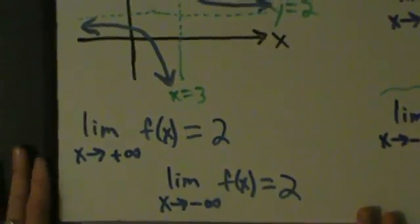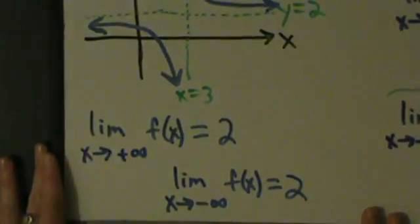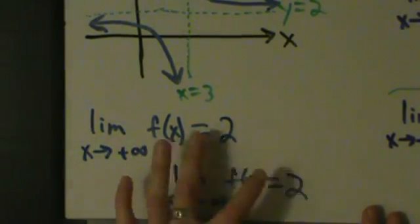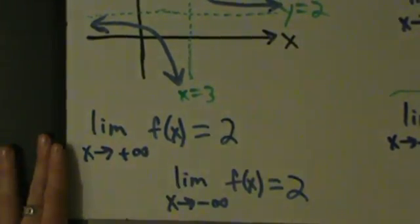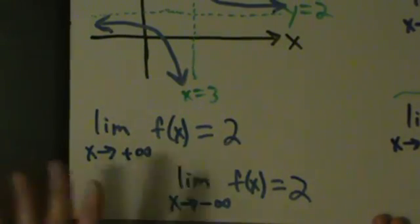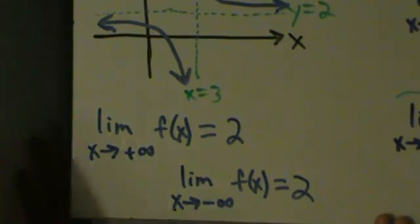You can see that limits at infinity are related to horizontal asymptotes. You might wonder: are they always the same? For most rational functions with a horizontal asymptote like this, yeah, they'll be the same. If you have an oblique asymptote it'll be a little different, and some non-rational functions may give different values. We'll see some examples of that in the next few videos.